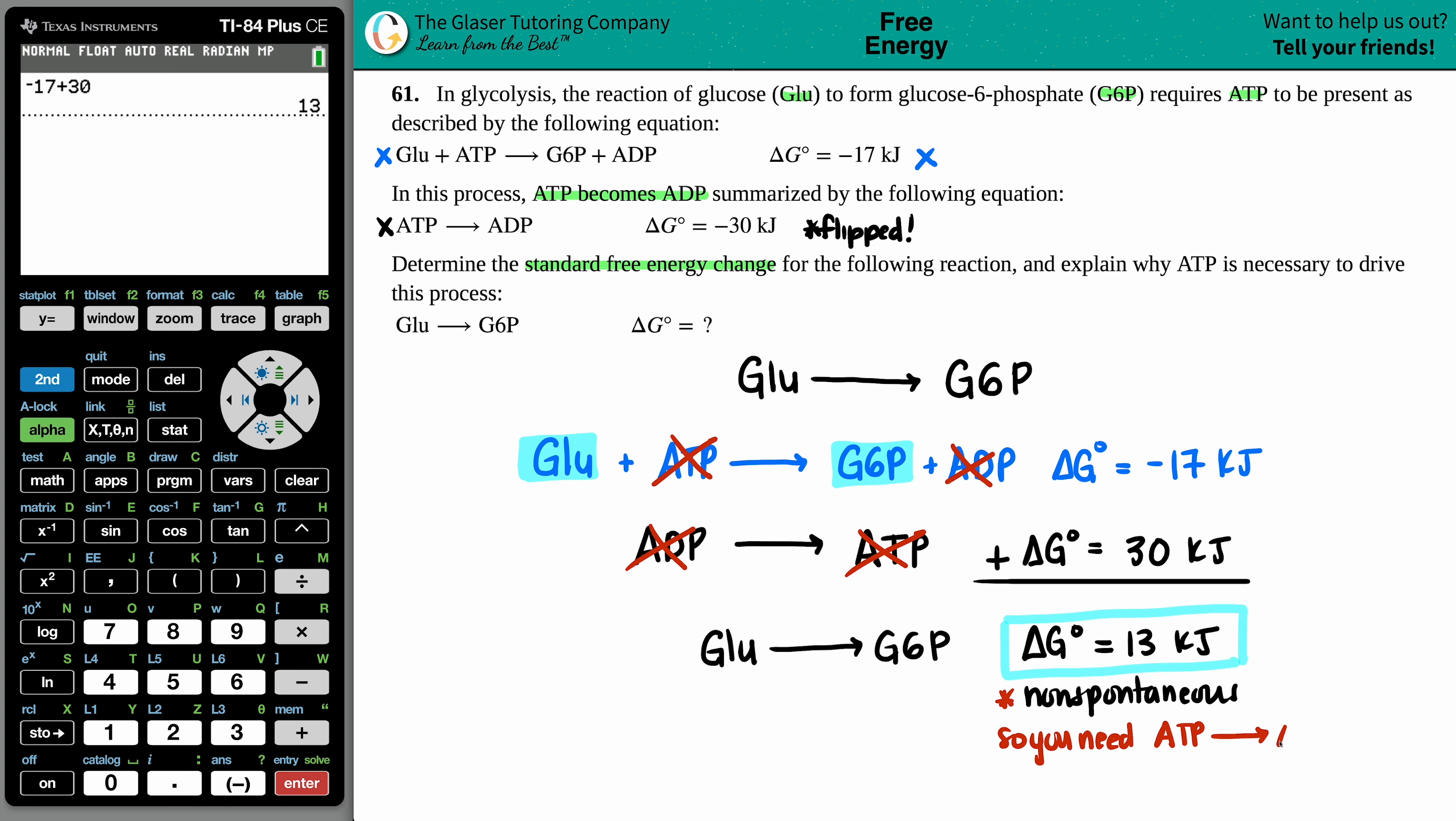Because without it, it's going to be a non-spontaneous reaction. So you need ATP to turn into ADP to make the overall process spontaneous.